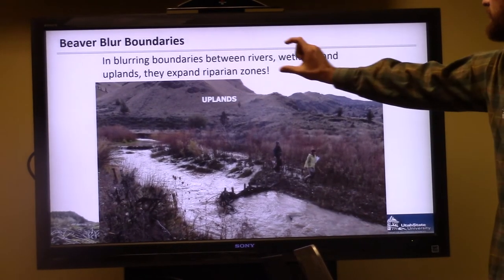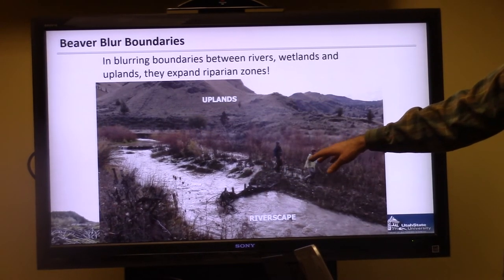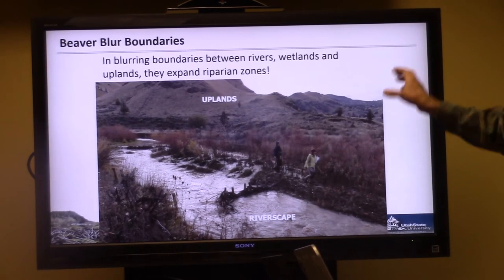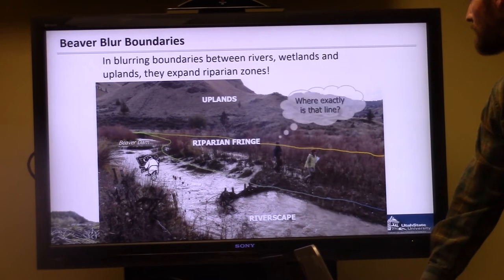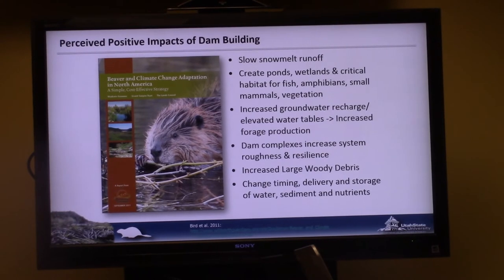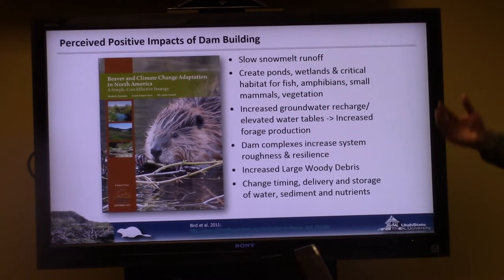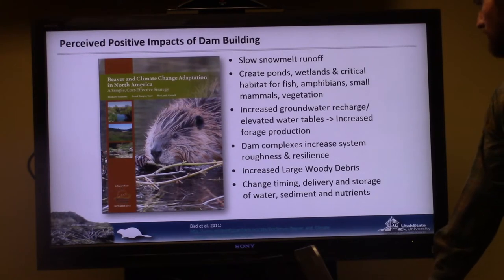What all this does is blur the boundaries between rivers, wetlands, and uplands. In-stream roughness from beaver dams slows flow and spreads it during high flows onto floodplains, expanding the riparian zone. Key perceived positive impacts include slowing snowmelt runoff, creating good in-stream and riparian habitat, increasing groundwater recharge, elevating water tables — potentially increasing forage production, which we're testing in projects in western Box Elder County — increasing system roughness and resilience, and changing the timing, delivery, and storage of water, sediment, and nutrients.